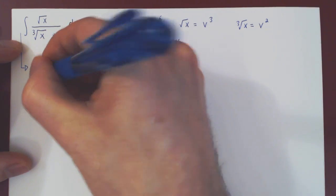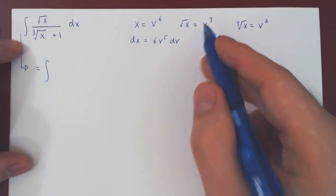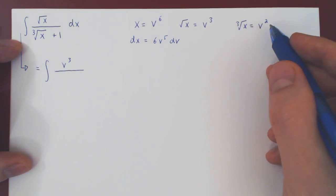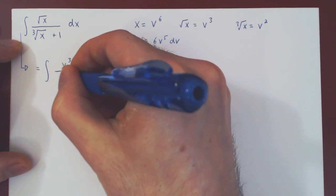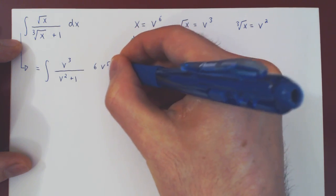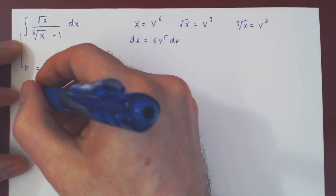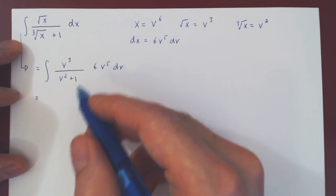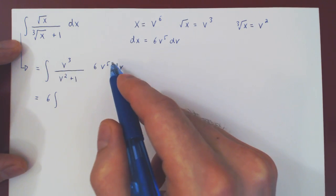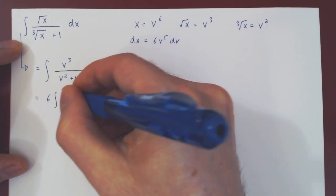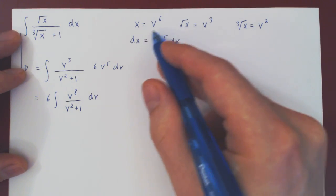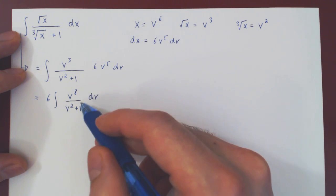This is equal to the integral of the square root of x, v cubed, over the cube root of x plus 1, v squared plus 1, times dx, which is 6 v to the 5 dv. So, two things. First, we can factor 6 outside of the integral as a scalar multiple. And here we'll have v cubed times v to the 5, so it's v to the 8, over v squared plus 1, with respect to v. So now you see, with this substitution, we are now integrating a rational function of v.